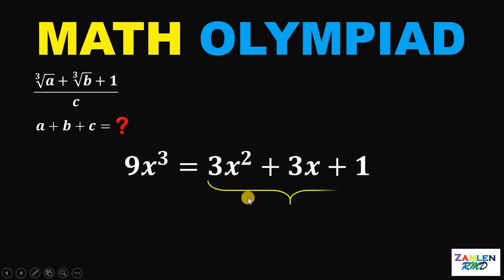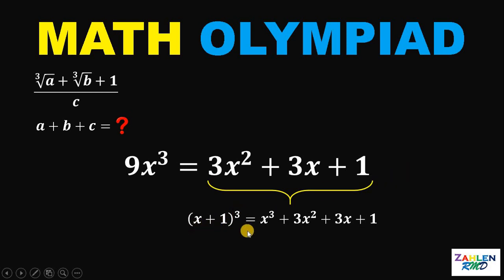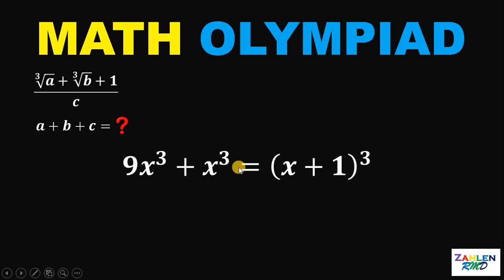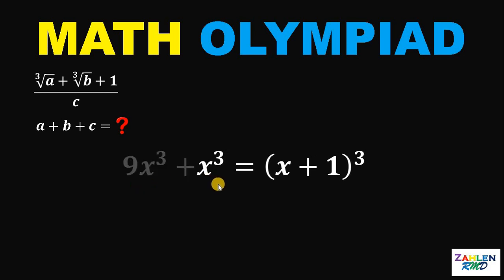Notice that the expression 3x squared plus 3x plus 1 is familiar because if we expand x plus 1 raised to 3, it equals x cubed plus 3x squared plus 3x plus 1. The only missing term in 3x squared plus 3x plus 1 is x cubed, so we add x cubed on both sides.